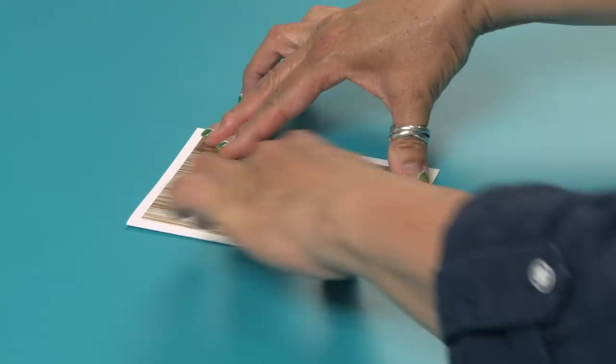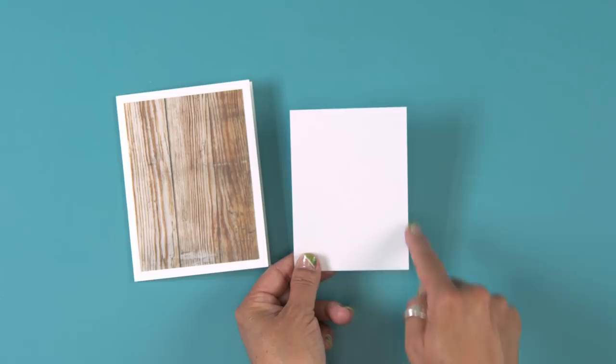Cut another piece of white cardstock to three and a half inches by four and three quarter inches. Adhere to the center of the pattern paper.